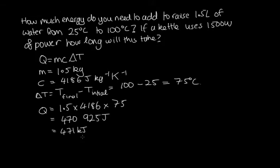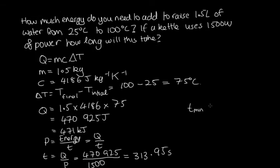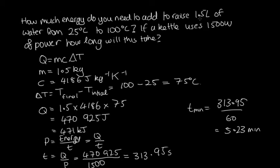Now we need to work out how long it's going to take. We know that power is equal to energy over time, so time equals q over power. The amount of energy added is 470,925 joules and the power used is 1,500 watts. Solving this, we get 313.95 seconds. Converting to minutes, that's 313.95 divided by 60, which gives us 5.23 minutes. That's a relatively long time, but this is a relatively low wattage kettle and 1.5 liters is quite a lot of water, so that is a completely reasonable answer.